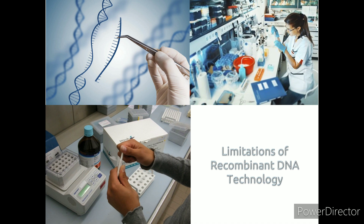Limitations of recombinant DNA technology include: destruction of native species in the environment when genetically modified species are introduced; cross-contamination and migration of proprietary DNA between organisms; recombinant organisms contaminating the natural environment. Additionally, recombinant organisms are a population of clones vulnerable in the exact same ways, so a single disease or pest can wipe out the entire population quickly. Creation of superbugs is hypothesized. There are also concerns about genetic information being stolen or used without permission, and many people worry about the safety of modifying food and medicines using this technology.